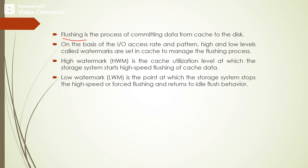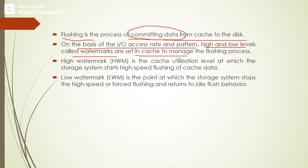The next concept is flushing. Flushing is a process of committing data from the cache to the disk. On the basis of IO access rate and pattern, high and low watermark levels are set in the cache to manage the flushing process. We can copy data from the cache into the disk based on these cache utilization levels. There are two key levels: high watermark level and low watermark level.